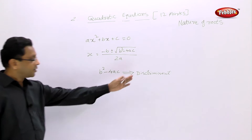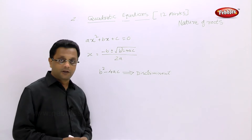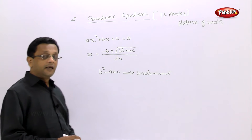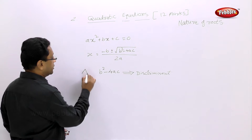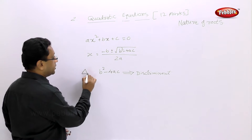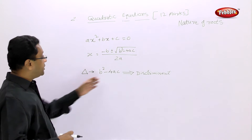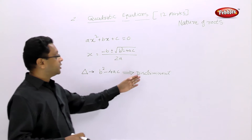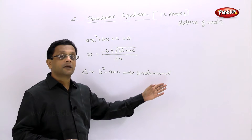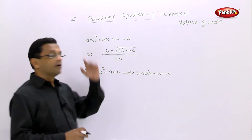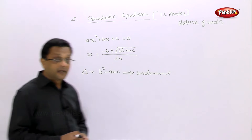The expression b² - 4ac is called the discriminant and it is denoted by delta. So delta = b² - 4ac, which is called the discriminant of the quadratic equation.